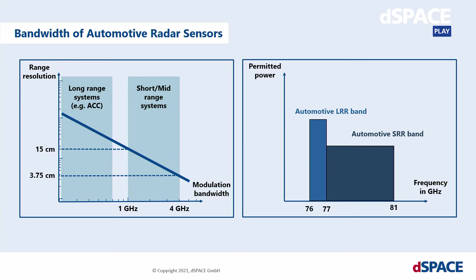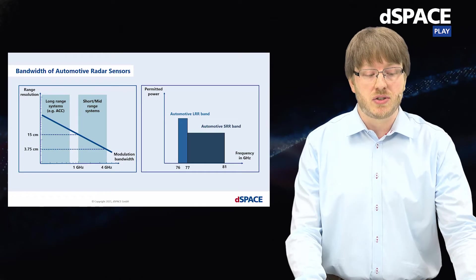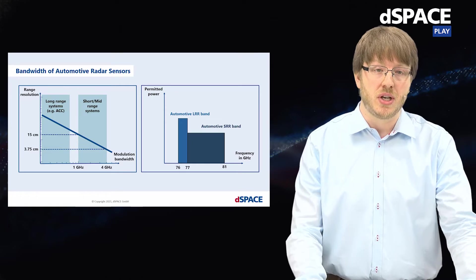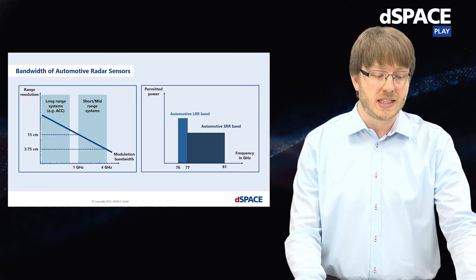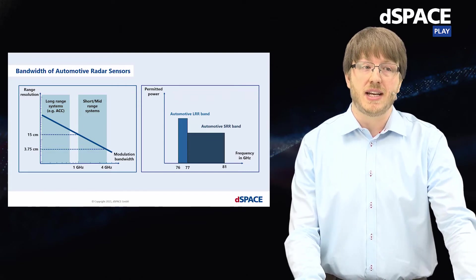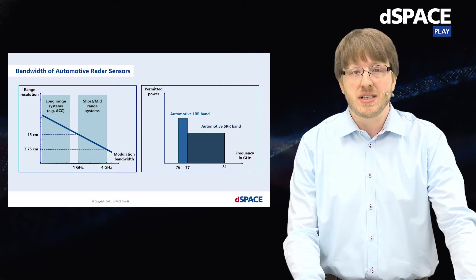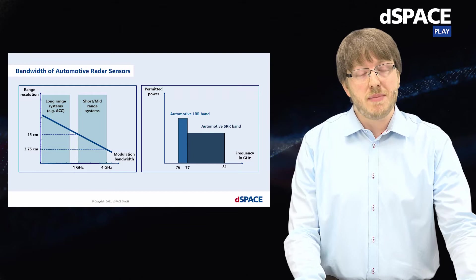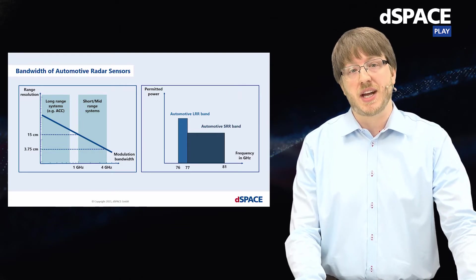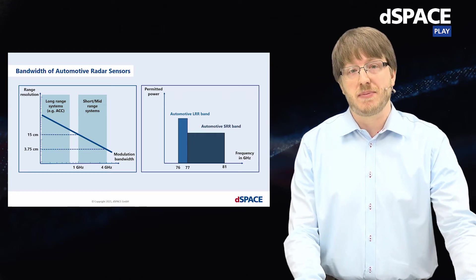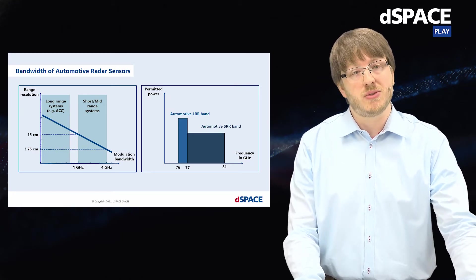In current regulations, this has been accounted for, and in addition to the long range radar band, an automotive short range radar band has been introduced, which allows radar sensors a modulation bandwidth of up to 4 GHz. To enable you to test and validate these sensors, DSpace has developed the DART 9040G, which supports high modulation bandwidth up to 5 GHz and the testing of range resolution down to 2.5 cm.